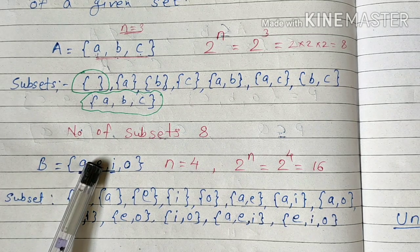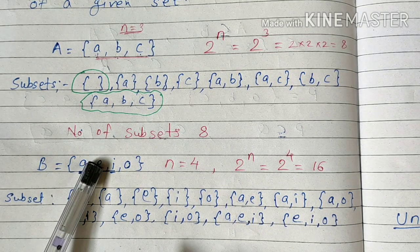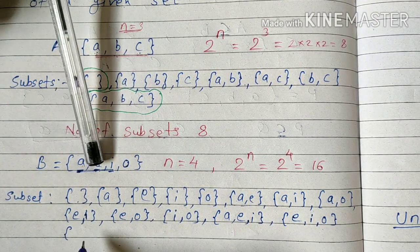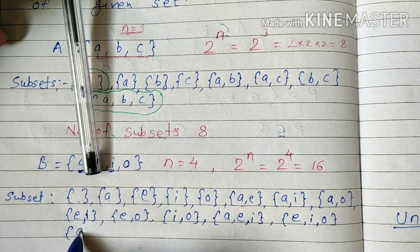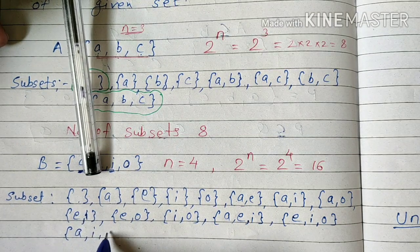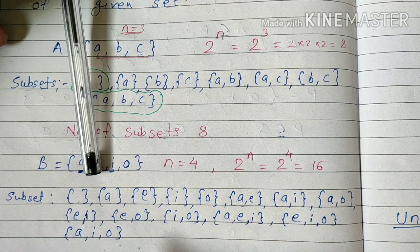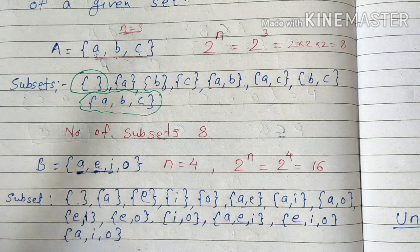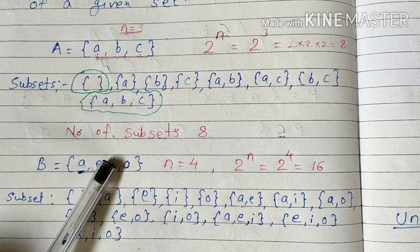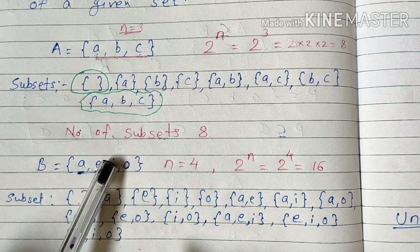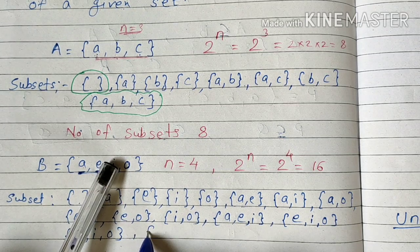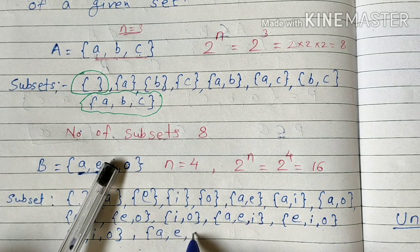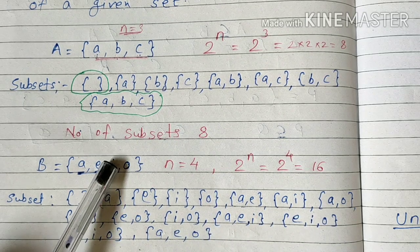Blocking this i. Blocking the e. So when we block this e, then what is the remaining? {a, i, o}. And blocking this i, what we get? {a, e, o}.